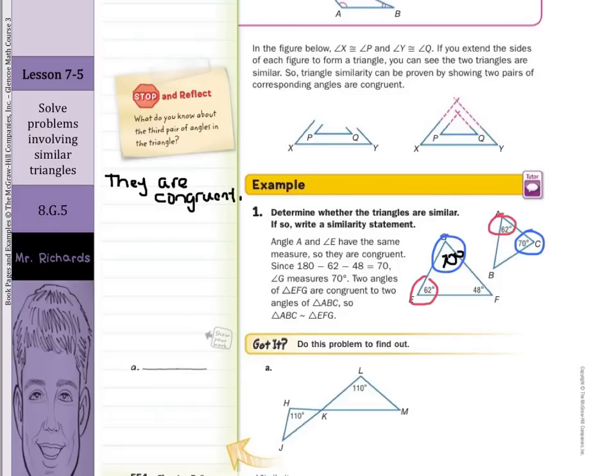What about this angle here and this angle here? Think back to vertical angles. When you have two intersecting lines, the angles formed that are opposite of each other are congruent.